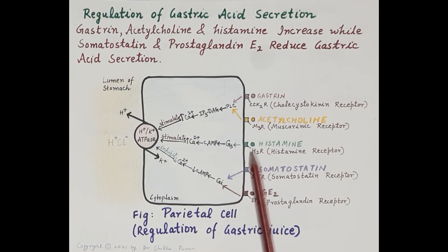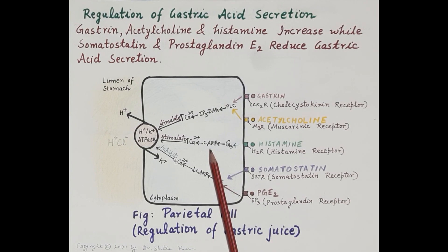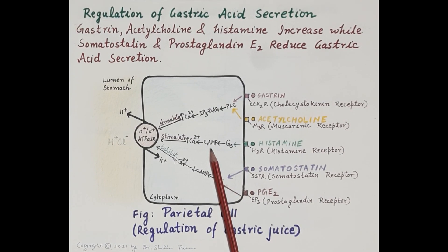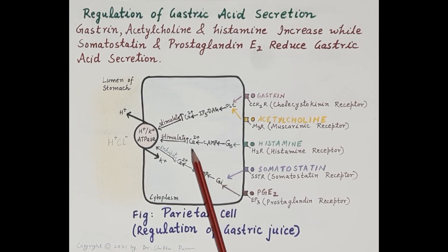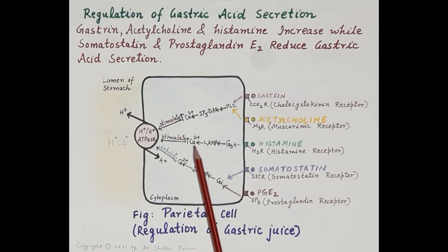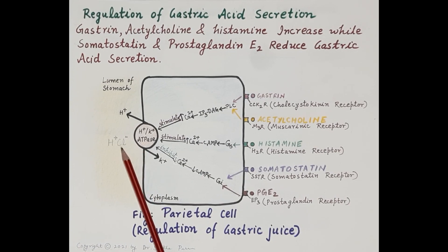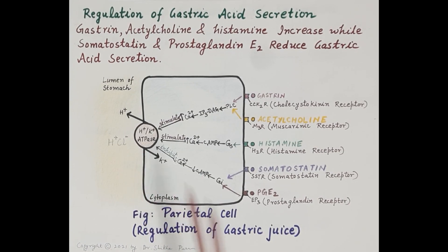On the other hand, histamine binds to its H2 receptors and acts through G-stimulatory proteins. As soon as histamine binds to H2 receptors, the enzyme adenylyl cyclase is activated, causing an increase in intracellular cyclic AMP. This in turn causes an increase in intracellular calcium in the parietal cells, which stimulates the proton pump and results in increased secretion of gastric acid.